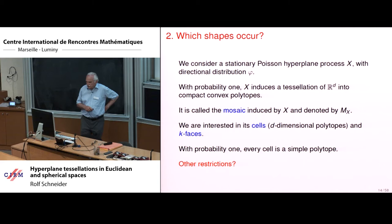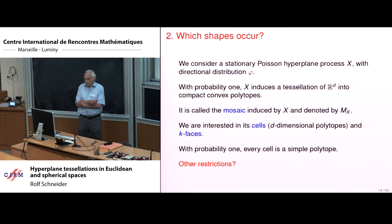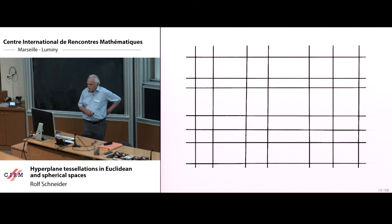Which shapes occur? We consider a stationary Poisson hyperplane process with a given directional distribution. With probability one, this will induce a tessellation of Euclidean space into compact convex polytopes — the mosaic induced by X, denoted M_X. We are interested in its cells, the d-dimensional polytopes, and later also in its k-faces. With probability one, every cell is a simple polytope. Are there any further restrictions?